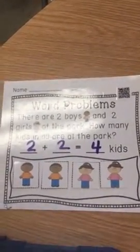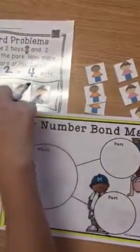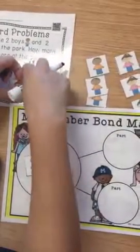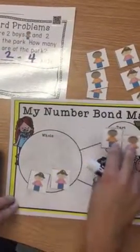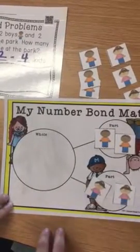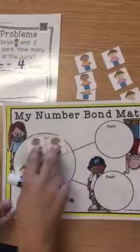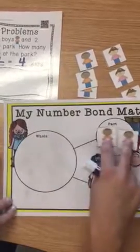Now if I wanted to, I could get my number bond mat and do the same thing here. I could take my two boys and my two girls and split them into two different parts and I have the same thing. So my number bond started with my whole number — four — and I can split those into two parts.